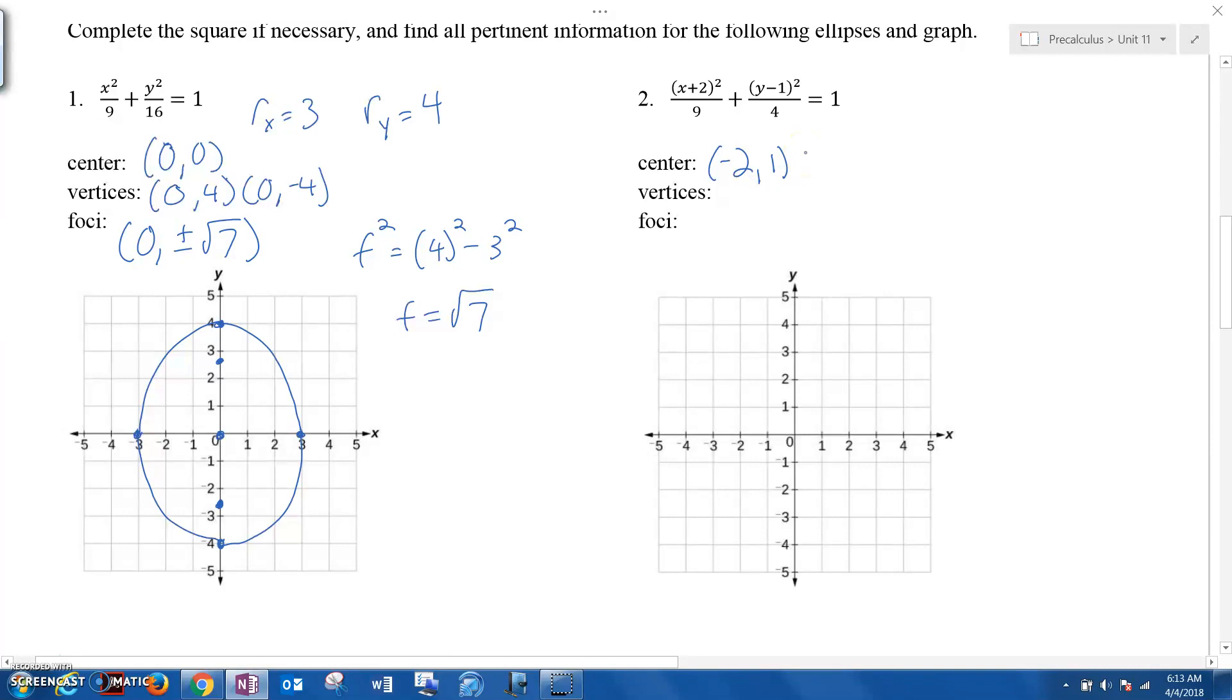Alright. So center is (-2, 1). Because, again, it's the opposite signs of what's in here. I also know my rx is 3 and my ry is 2. So I go to (-2, 1). I move 2 in the y in both directions. I move 3 in the x. And now we finally have an ellipse where it's sideways, where the x-axis is the longer major axis. So let's write our vertices. Now be careful. The vertices aren't these two anymore. They're the ones that are on the two ends, again on the major axis. So my vertices are (1, 1) and (-5, 1).